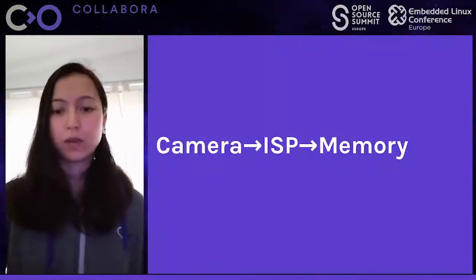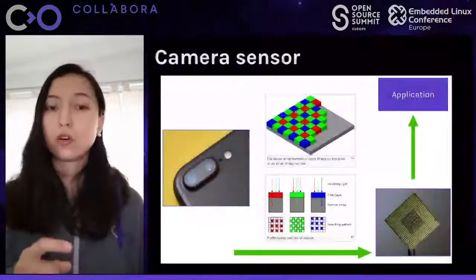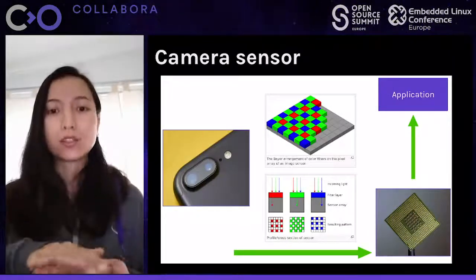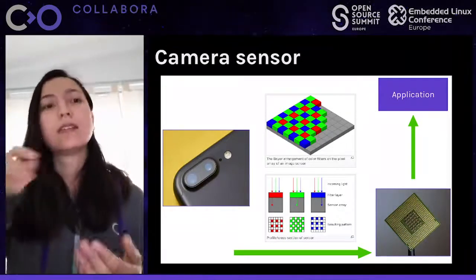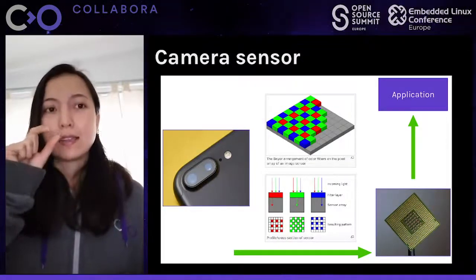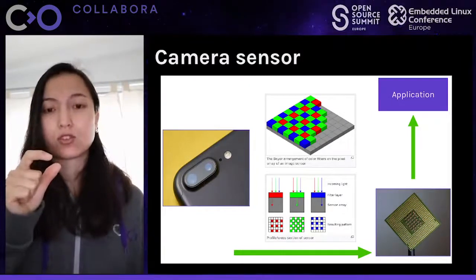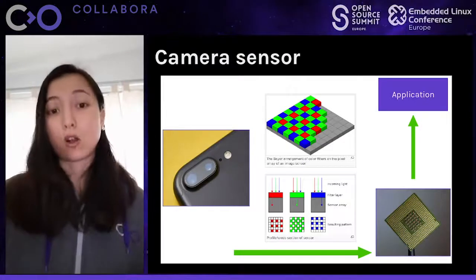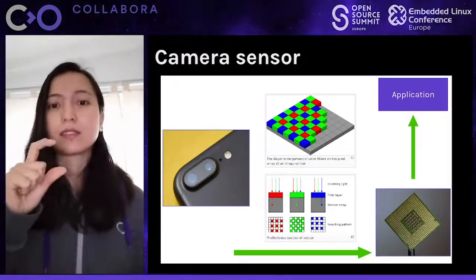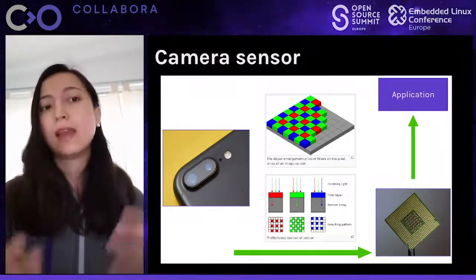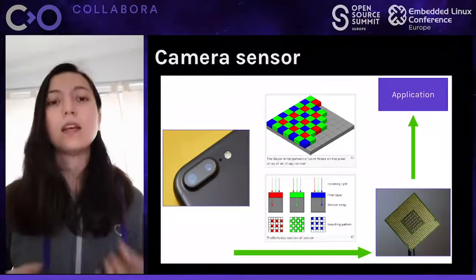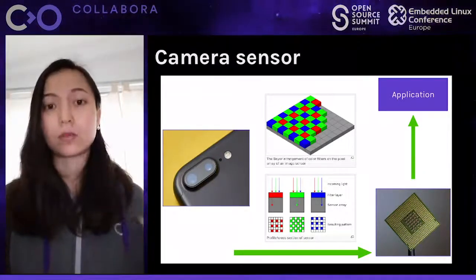Let's start with the camera ISP memory pipeline. On our phone, we usually have a camera composed of a sensor. This sensor is composed of smaller light sensors, represented by a gray grid, which comes from Wikipedia. These gray sensors are sensitive to light, and on top of them there's a color filter that only allows a specific color to pass through. The readings of all those color sensors are sent to your SoC, processed in some way, and the image is made available to your application.